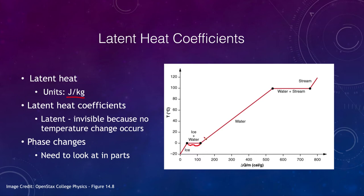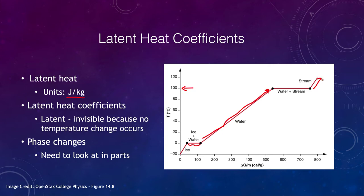Once all the ice is converted to water, if you continue to apply energy, that water will warm up until it reaches 100 degrees Celsius — the boiling point of water — at which point you will have a mixture of water and steam. That mixture remains at 100 degrees until all the water is converted to steam. If you continue to add energy, the steam will rise to a higher temperature.